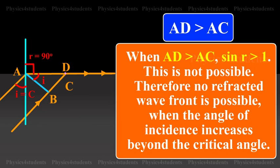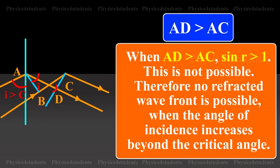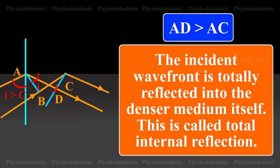AD is greater than AC. When AD is greater than AC, sin r greater than 1. This is not possible. Therefore, no refracted wavefront is possible. When the angle of incidence increases beyond the critical angle, the incident wavefront is totally reflected into the denser medium itself. This is called total internal reflection.